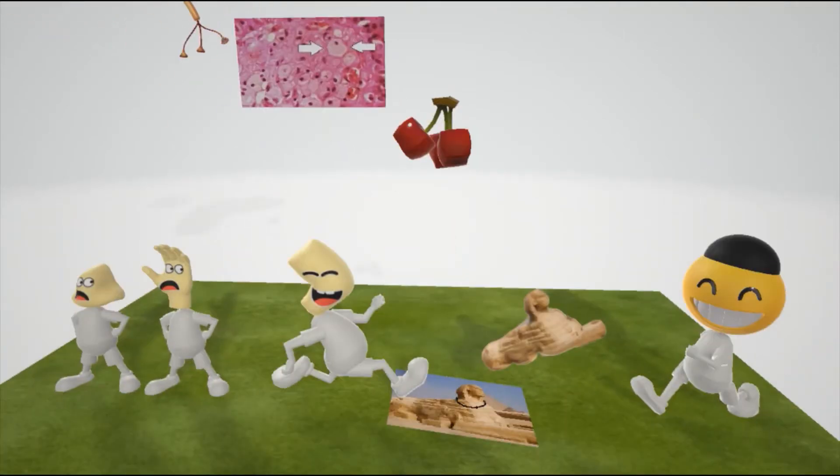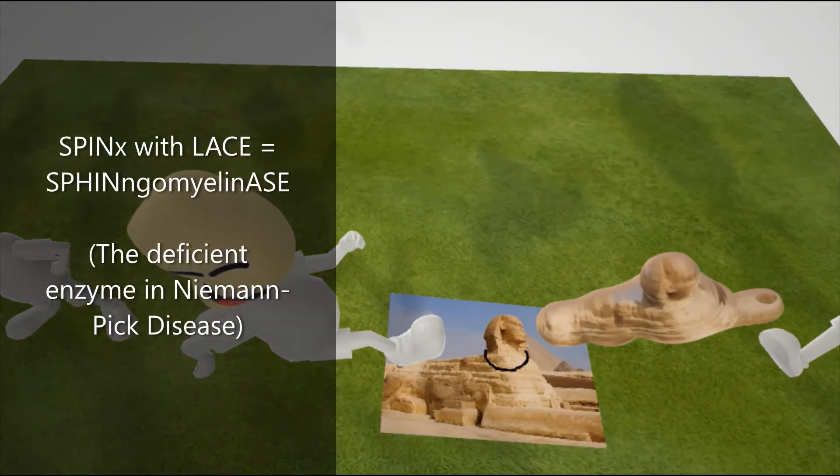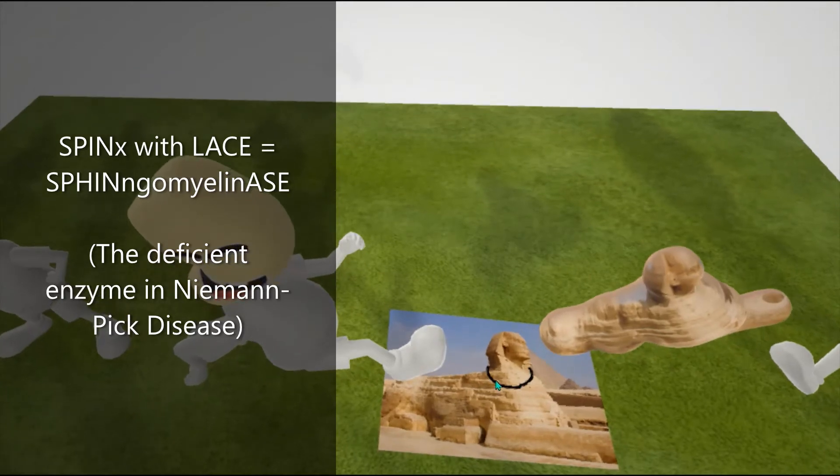As he's running, he steps on this board. Let's take a look at what's on this board. It has a picture of the Sphinx on it. The Sphinx is a character with a female face and a lion body. He steps on this board. The Sphinx has a lace on it. The Sphinx lace—that helps us remember Sphingomyelinase. Sphingomyelinase is the deficient enzyme in Niemann-Pick Disease.